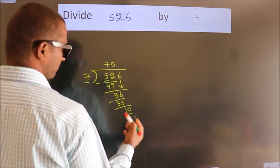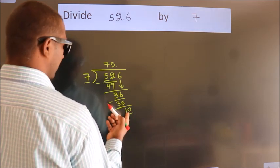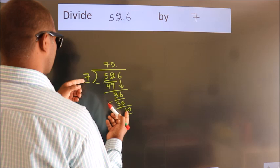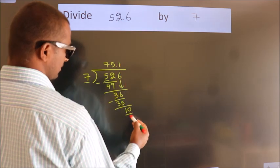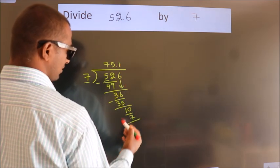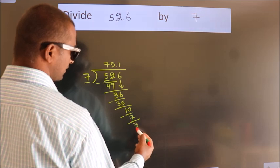So, 10. A number close to 10 in 7 table is 7 ones, 7. Now, we subtract. We get 3.